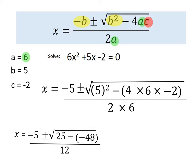Now when I input that into my calculator, the first thing I need to do is press the fraction button. So you're going to press the fraction button on your calculator and you're going to write minus 5. Now you can't write plus or minus, so the first thing we're going to do is put plus. So plus the square root of 25, minus, and then I'm going to put in brackets, negative 48. Close the bracket. And then I arrow down and put the 12 on as the denominator.